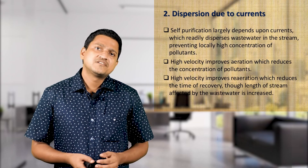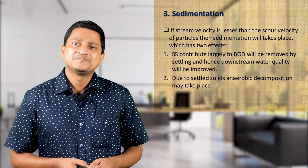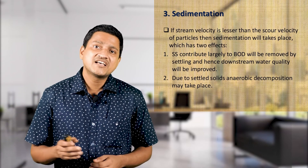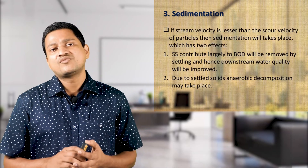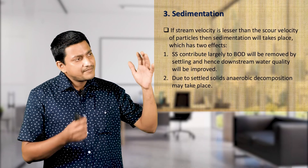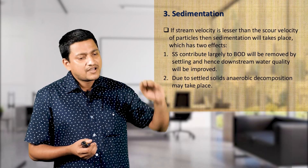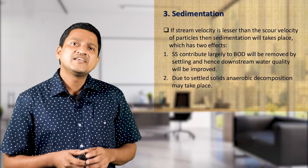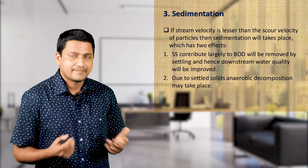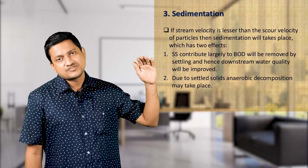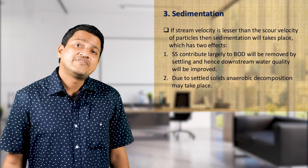The third process is sedimentation. If stream velocity is less than the scour velocity, sedimentation takes place, which has two effects. BOD is largely removed by settling and downstream water quality improves. Once the velocity decreases, particles settle to the bottom of the stream, increasing DO content and water quality. However, settled solids at the bottom may undergo anaerobic decomposition, which also contributes to the self-purification of the stream.